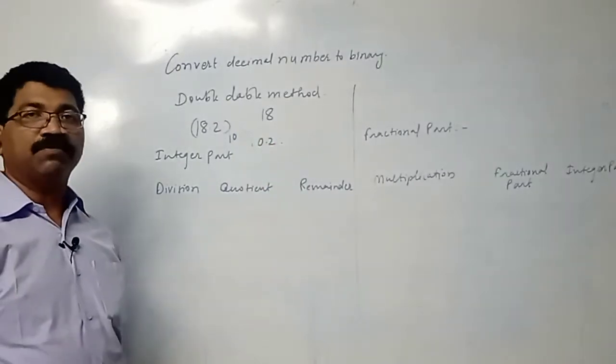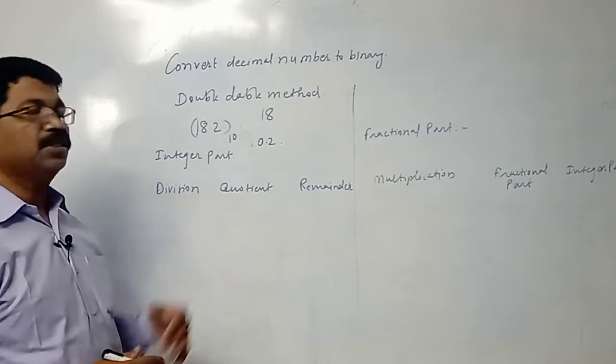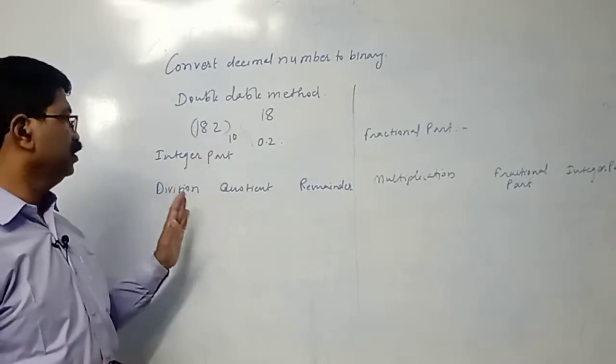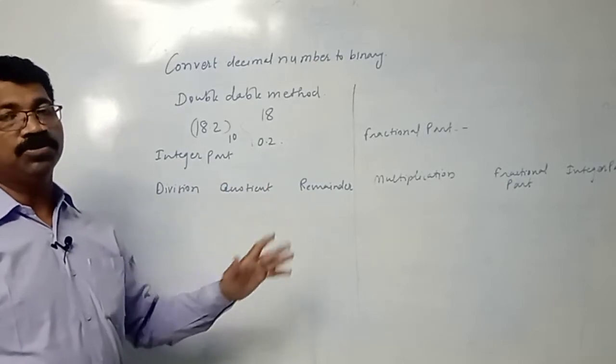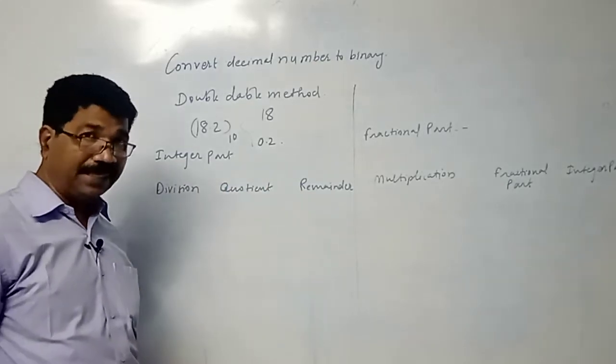Now these two parts are to be converted in different ways. So let us consider the integer part, which is 18. We divide 18 by 2, obtain the quotient and remainder. While dividing, we have to divide it completely.